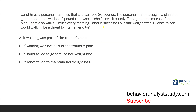Janet hires a personal trainer so that she can lose 30 pounds. The personal trainer designs a plan that guarantees Janet will lose two pounds per week if she follows it exactly. Throughout the course of the plan, Janet also walks three miles every morning. Janet is successfully losing weight after three weeks. When would walking be a threat to internal validity? Internal validity means our plan, our intervention, our manipulation — and not any confound or extraneous variable — is controlling the behavior.